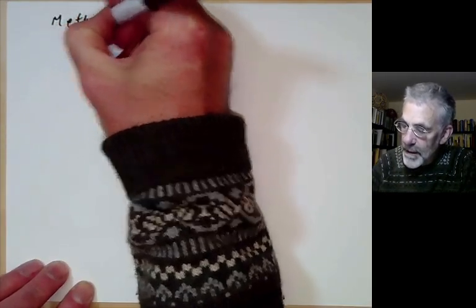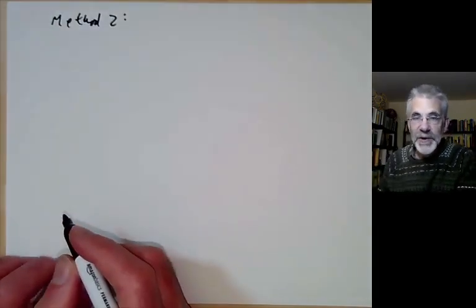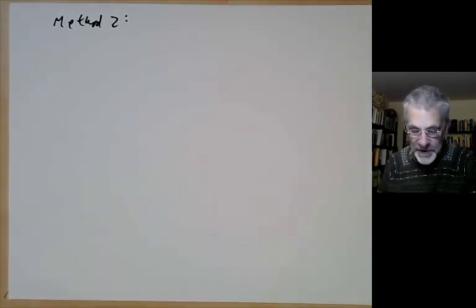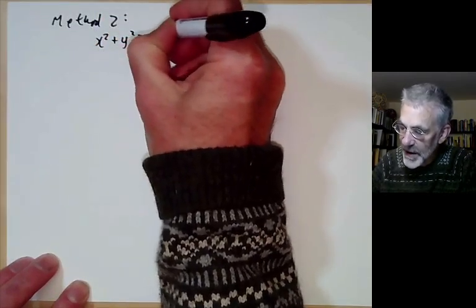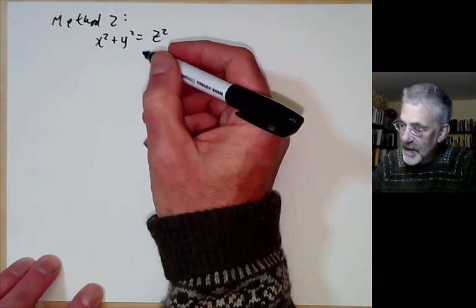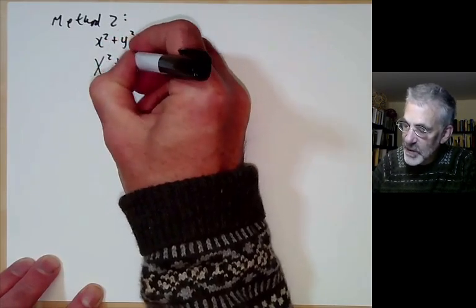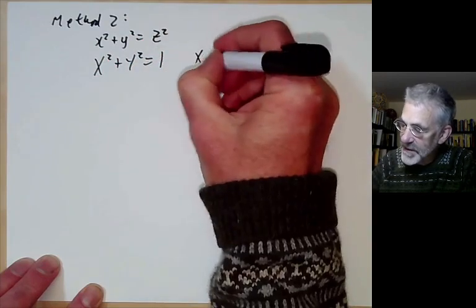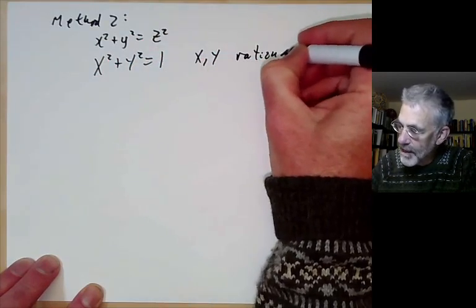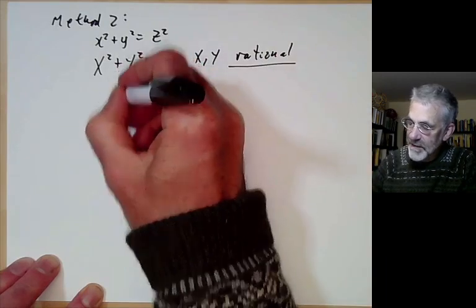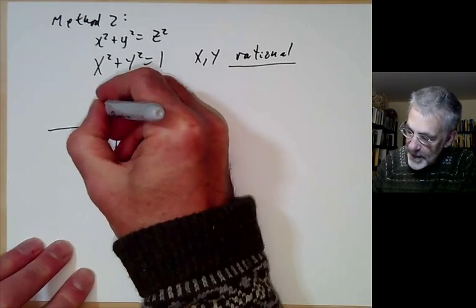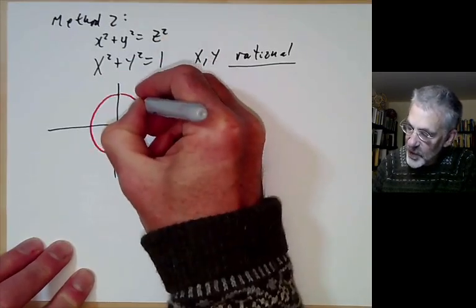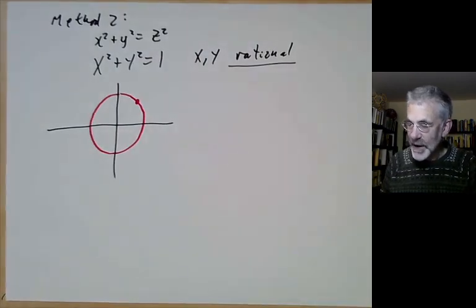Now let's have method 2, which is a geometric method. The first method used number theory; now we're going to use geometry. If we've got x squared plus y squared equals z squared, we may as well divide by z squared and get x squared plus y squared equals 1 with x and y now rational numbers. This is just the equation of a circle, so what we're doing is trying to find points on the circle with rational coordinates.